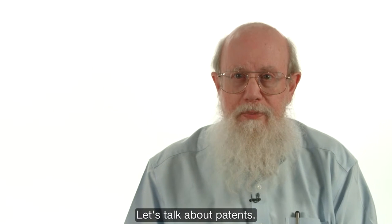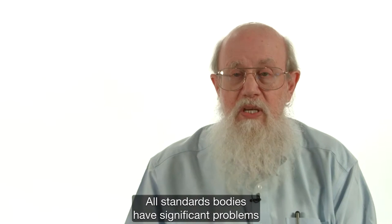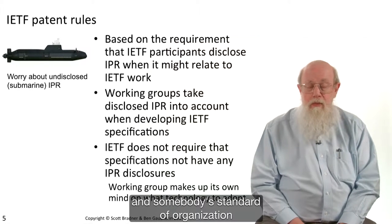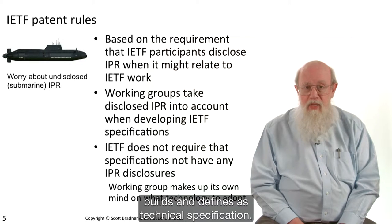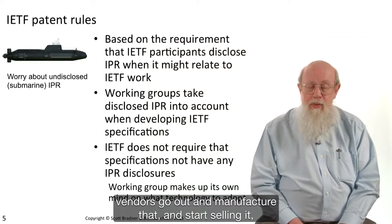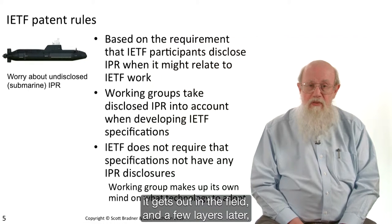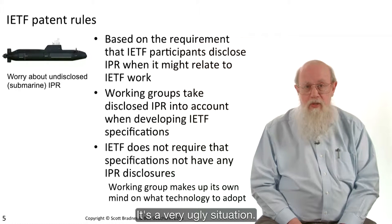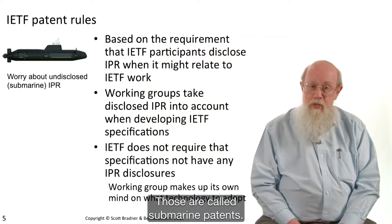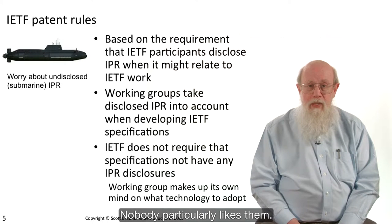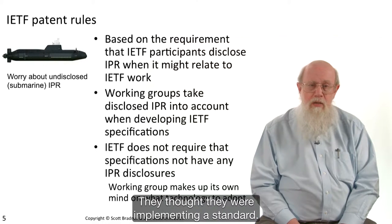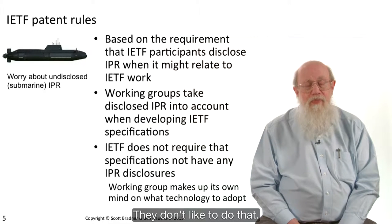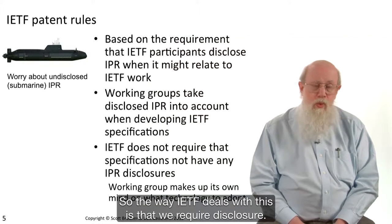Now let's talk about patents. All standards bodies have significant problems with patents. The biggest problem with patents is when they are not disclosed and a standards organization builds and defines a technical specification, vendors go out and manufacture and start selling it, it gets out in the field, and a few years later a patent holder starts suing everybody for patent infringement. It's a very ugly situation. Those are called submarine patents. We really don't like those, and nobody particularly likes them. It's a surprise to the vendors — they thought they were implementing a standard, and suddenly it turns out that they have to pay some lawyers a lot of money.